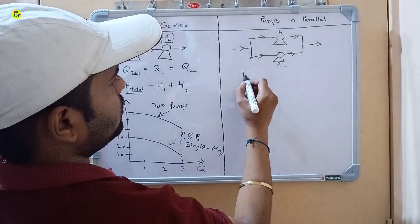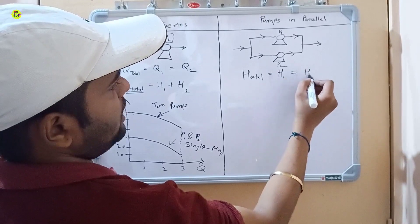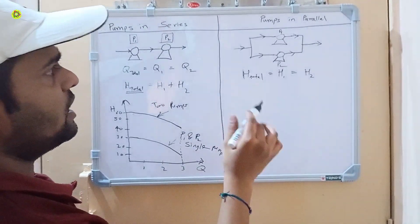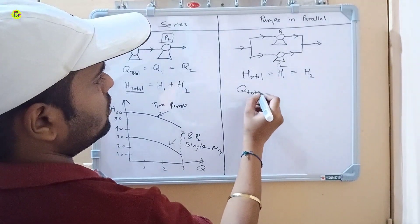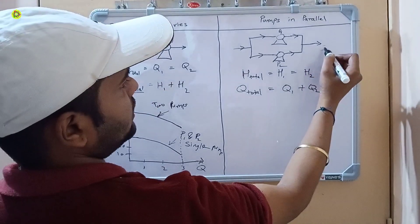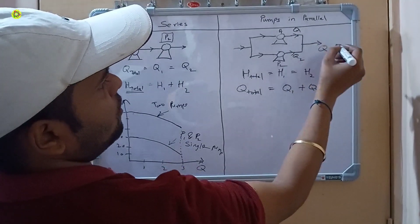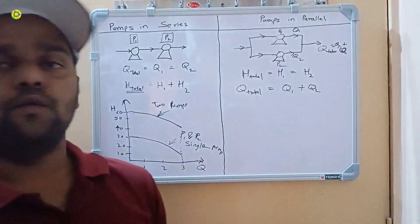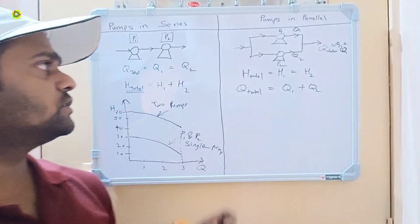In the parallel arrangement of pumps, the head is constant. Because of this arrangement, Q total equals Q1 plus Q2 — that is, the total flow rate is the sum of Q1 and Q2. We use this parallel arrangement to increase the flow rate at the output of the pumps.